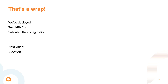That's a wrap. This was the third video of the SD branch from scratch series. We've used the group concept to automate our configuration of the VPN concentrators. Now that they're up and running, we'll cover the SD-WAN part in the next video. I hope you found it informative, and if you'd like to receive updates about more videos, like and subscribe, and feel free to leave any questions or comments below.